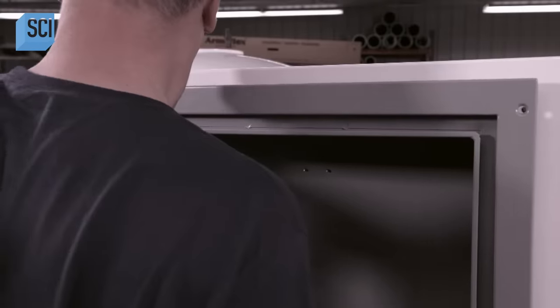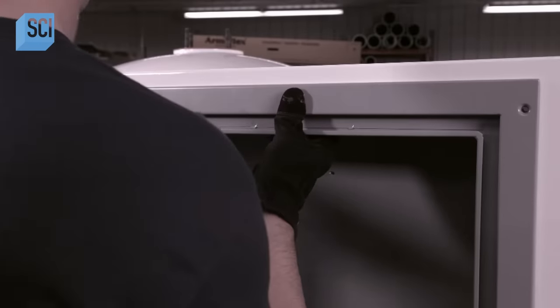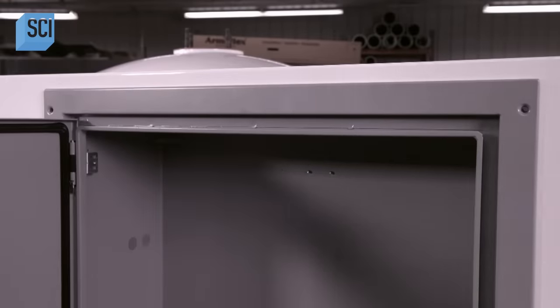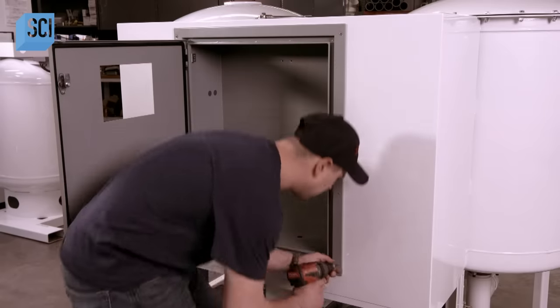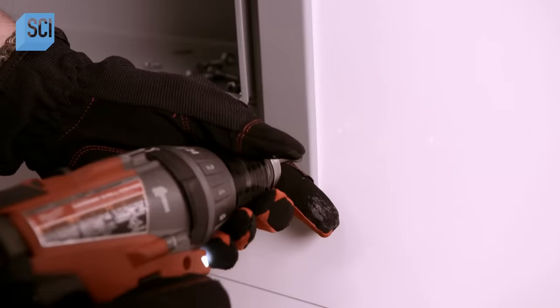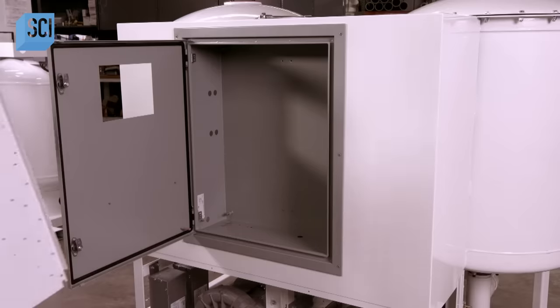Workers install an electrical box into the machine's frame. Then they install the panel inside the box.